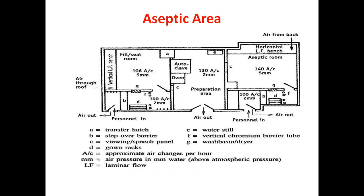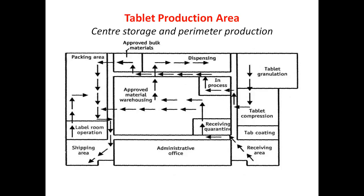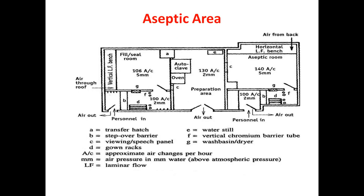The aseptic area diagram includes specifications for the preparation area and ceiling groove. Denotations a through g are used: 'a' stands for catch stop or barrier giving speech channel; 'b' represents air pressure; 'e' is laminar flow; 'f' is vertical chromium barrier tube; and 'g' is a wash basin.